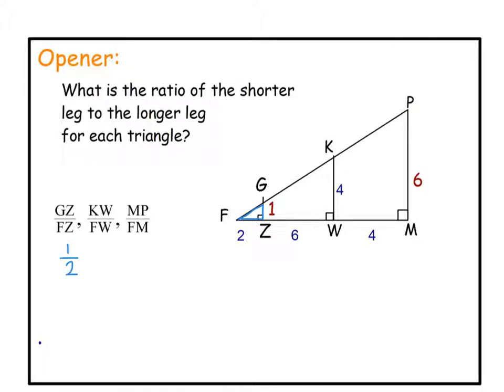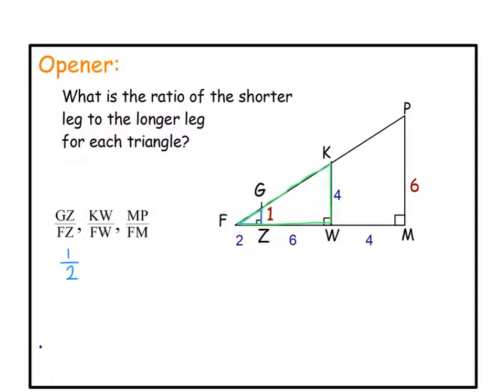Now we're going to take the next triangle, right there in green, and write its ratio. The shorter leg is 4, longer leg 2 plus 6 is 8.